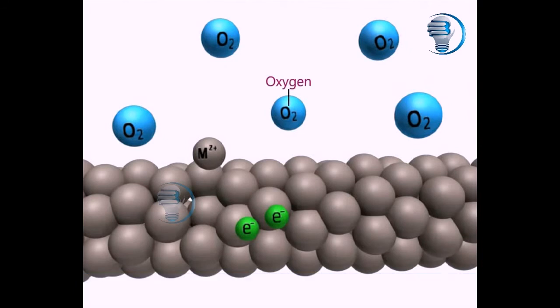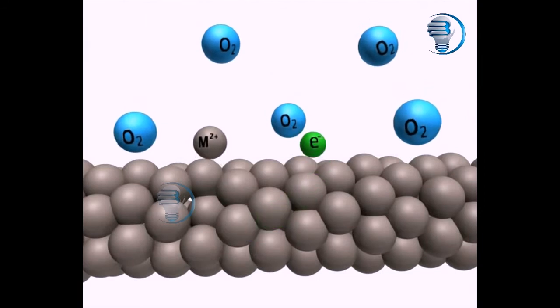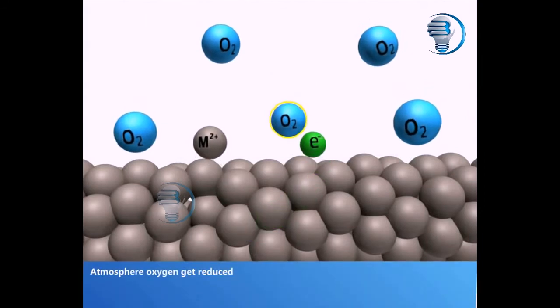Oxygen. Atmospheric oxygen gets reduced: ½O₂ + 2e⁻ → O²⁻.